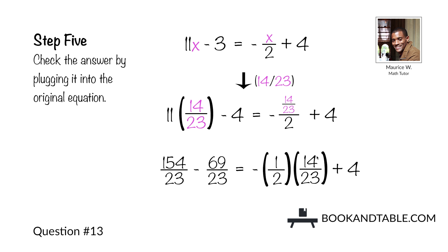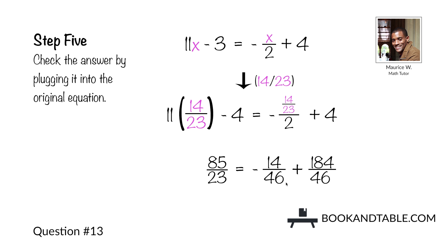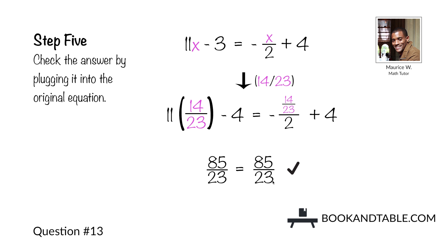1 times 14 is 14, and 2 times 23 is 46. On the left side we had 85 over 23. On the right side, negative 14 over 46 plus 184 over 46 (converting 4 to a denominator of 46) gives 170 over 46. Dividing both numerator and denominator by 2 gives 85 over 23. So that confirms the answer to question thirteen is x is equal to 14/23.